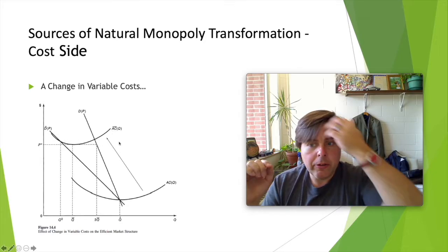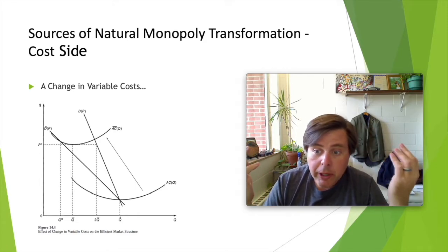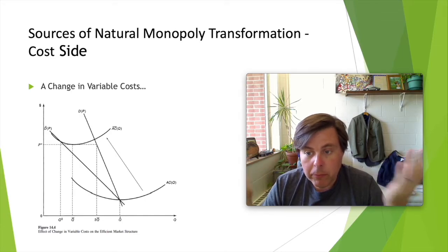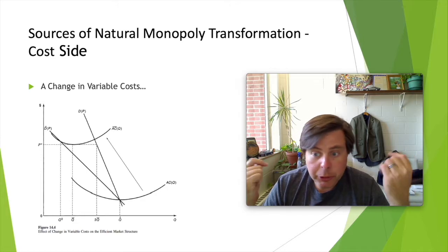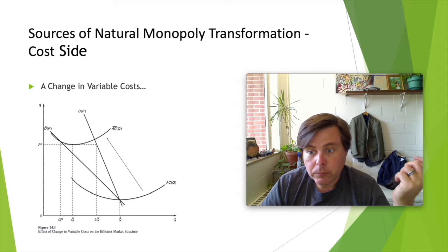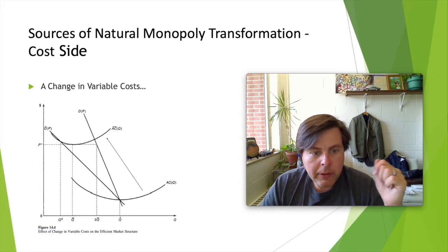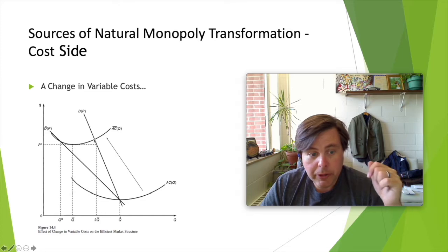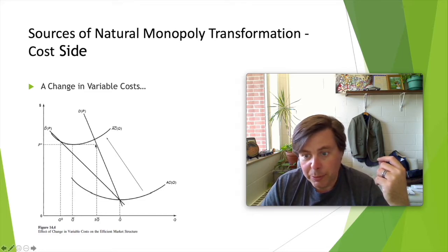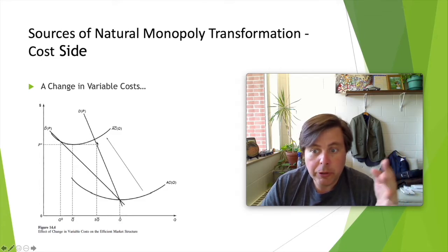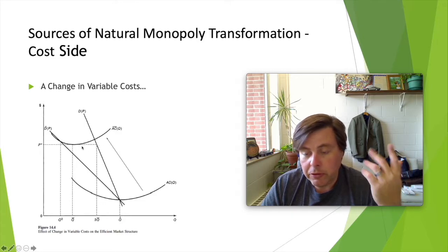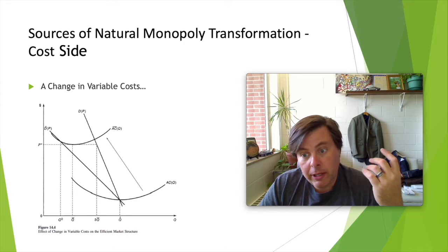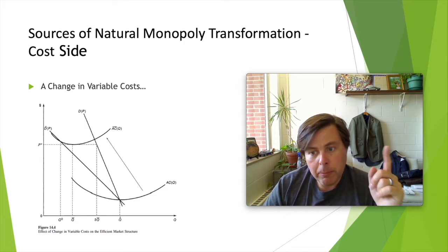If we consider demand D(P), we recognize that originally production was at efficient scale, and now it's greater than minimum efficient scale — in fact it looks like two times minimum efficient scale. So in this case, if demand looks like this, this industry could become competitive because two firms could exist in this market space and both be efficient, and hopefully between the two of them they could compete and drive prices down a bit.